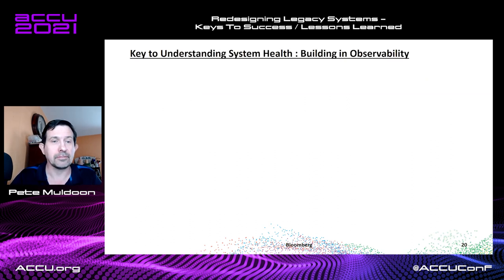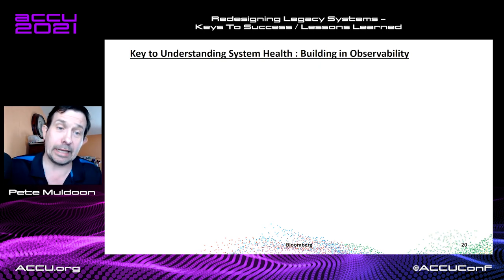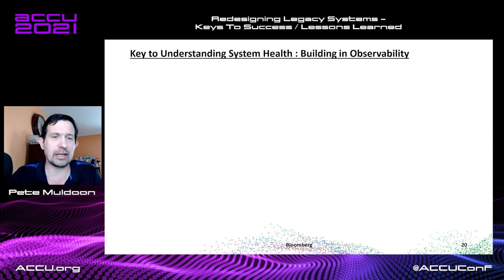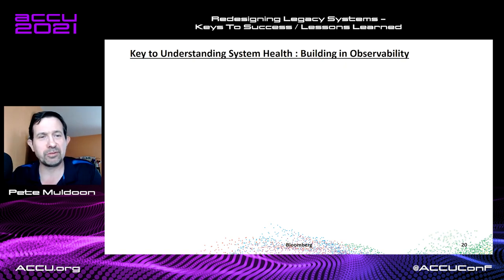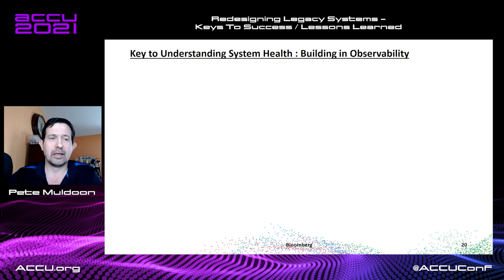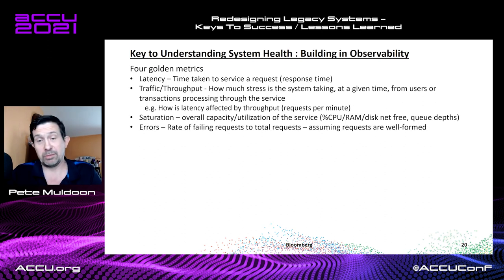The key to understanding system health is building observability. Site Reliability Engineering has been following the same track that unit testing used to — these days unit testing is pretty prevalent, but having performance metrics on a system I still don't think has quite caught on yet. There's the idea of the four golden metrics for transactional systems: latency — how much time it took to service a request; throughput — how does latency behave as load increases; saturation — the overall utilization of capacity; and errors — what is the rate of failing requests to total requests.